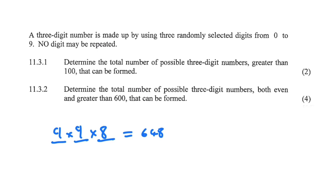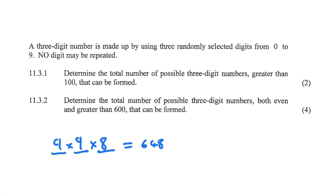Now let's look at problem 11.3.2: determine the total number of possible three-digit numbers that are both even and greater than 600. So we need all possible three-digit numbers that are greater than 600 and are even. 'Greater than 600' implies that on the first position we can only have 6, 7, 8, or 9. If a number starts with 6 and no repetition is allowed, it will be greater than 600. Consider 403 — it is odd because it ends with an odd digit.